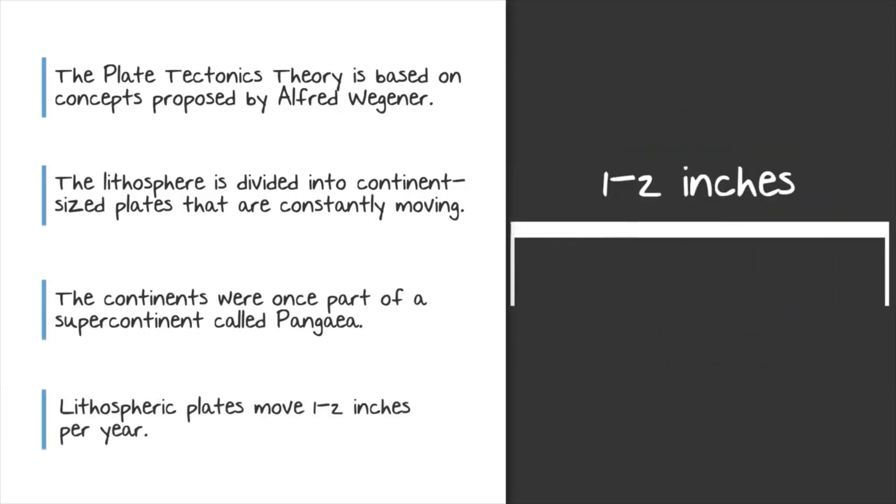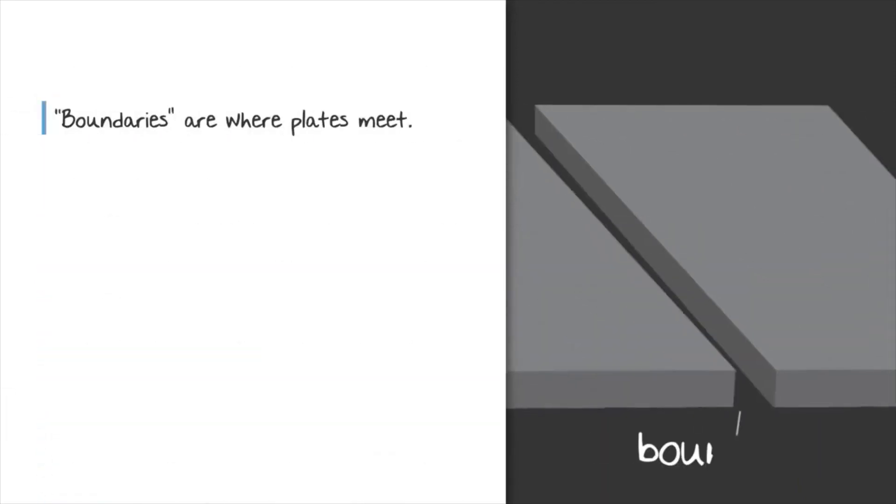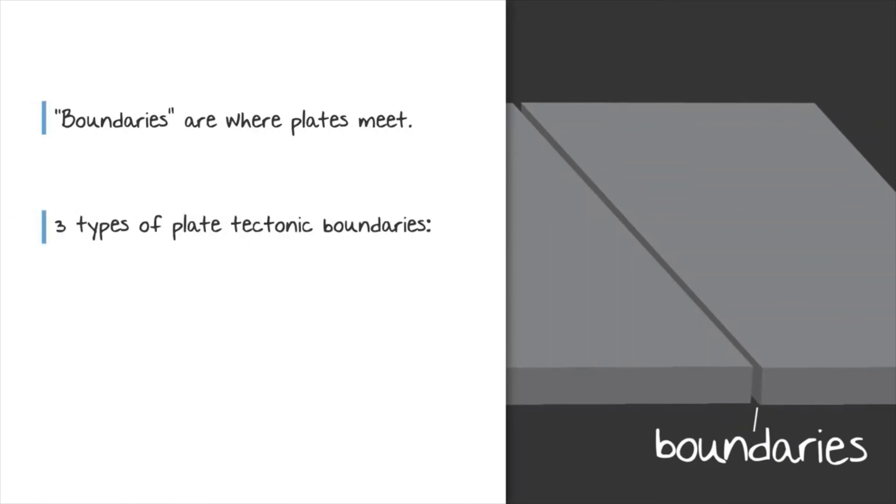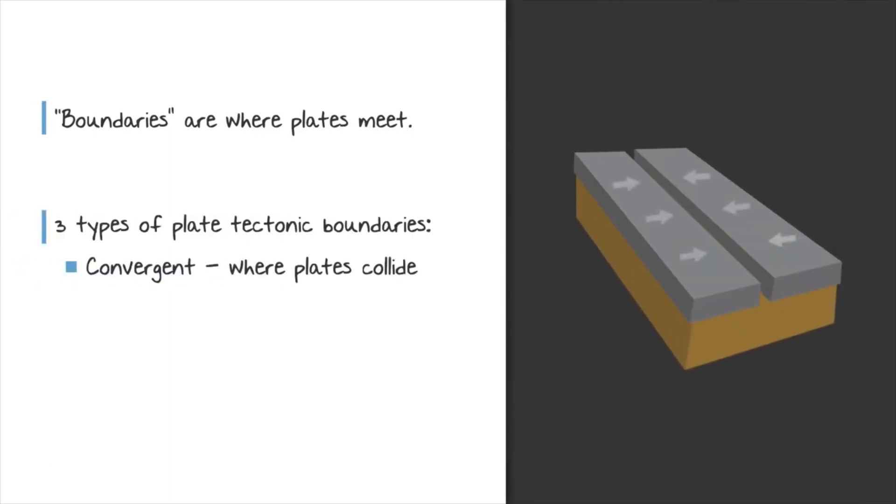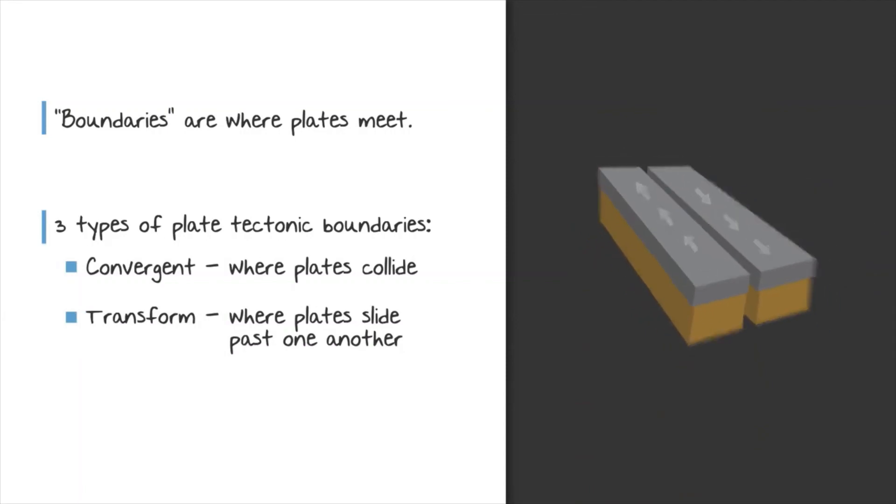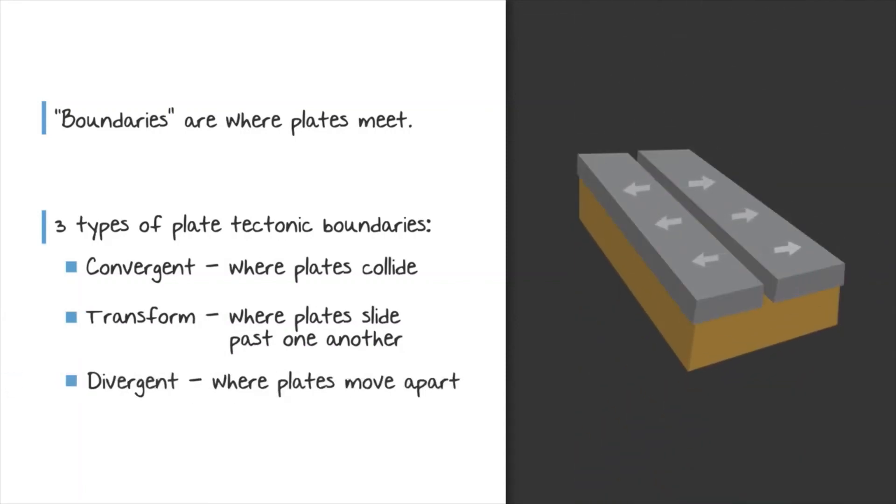These plates move one to two inches per year. Where they meet is called boundaries, and there are three different types: convergent boundaries where plates collide, transform boundaries where plates slide past one another, and divergent boundaries where they move apart.